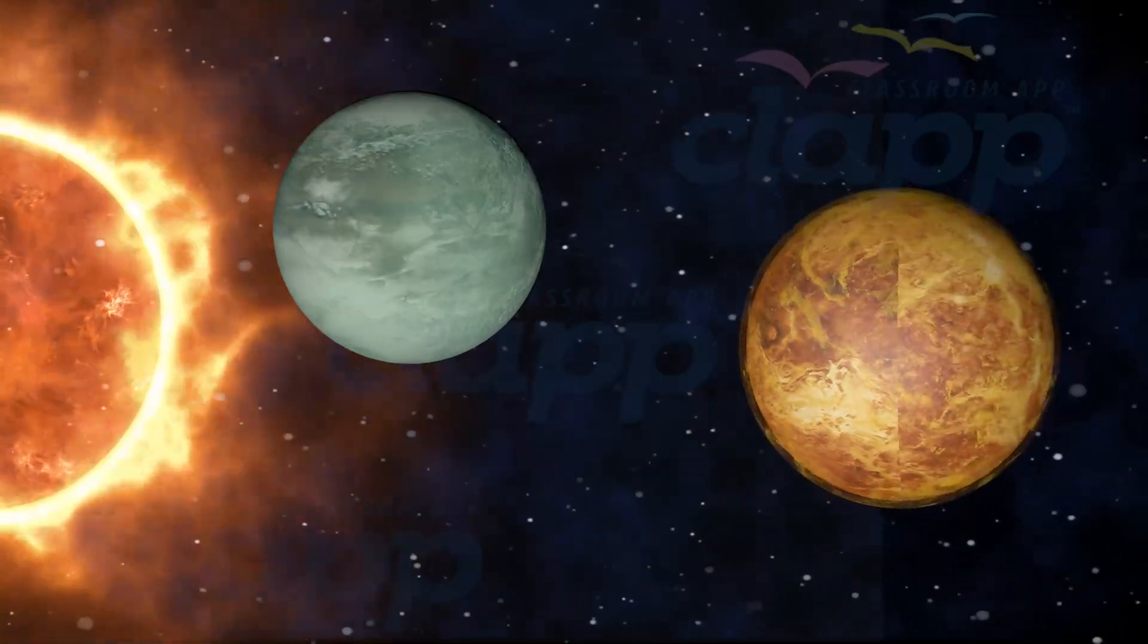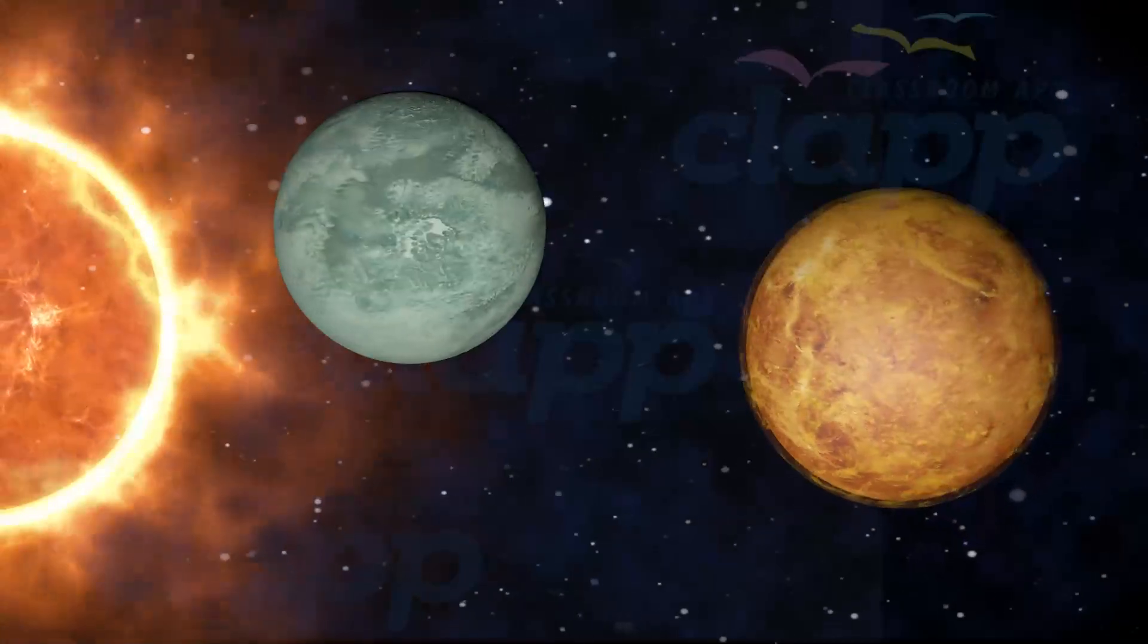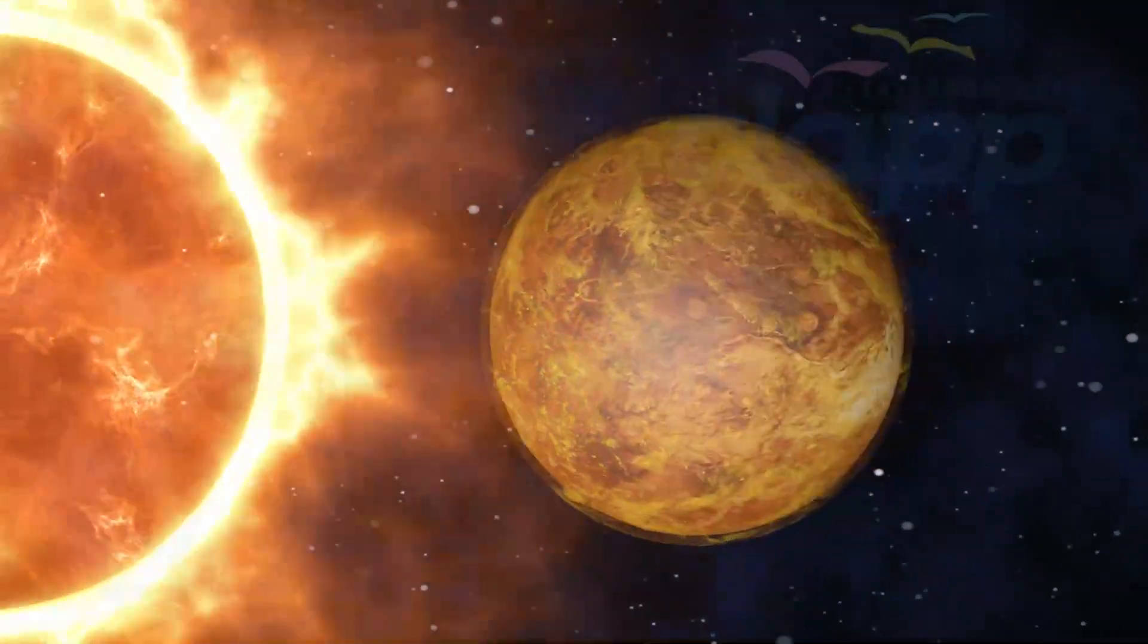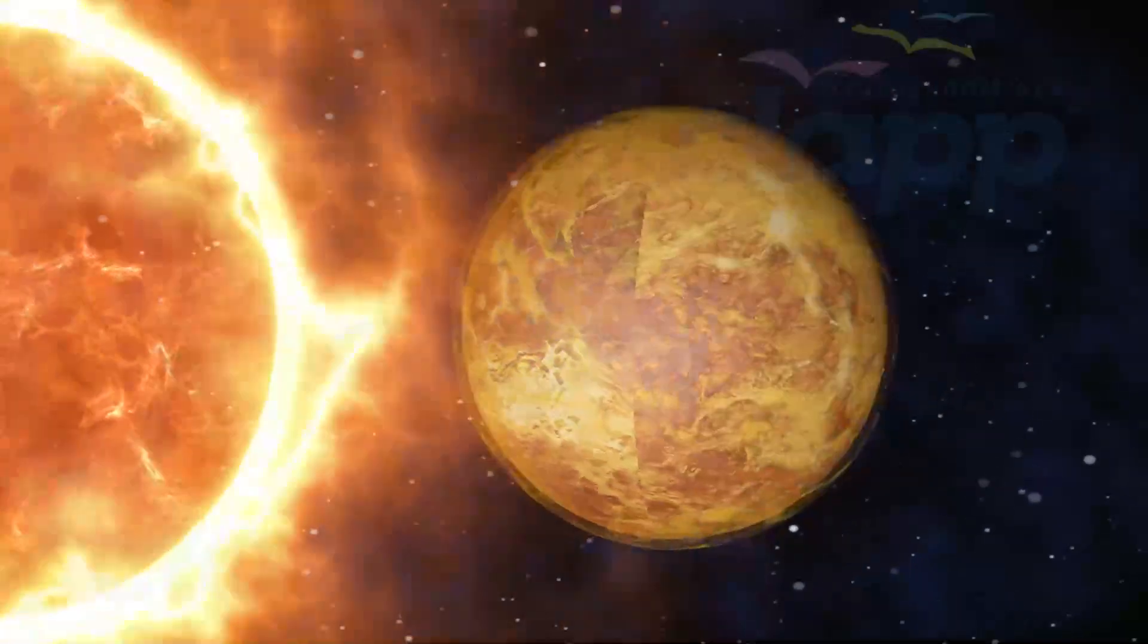Venus. Venus is the second planet from the Sun. It formed approximately 4,503 million years ago.